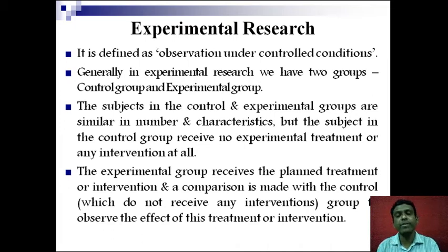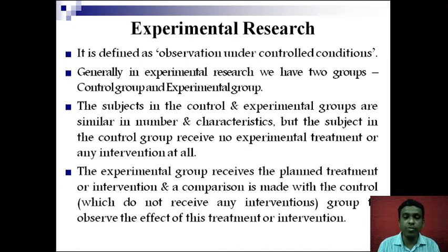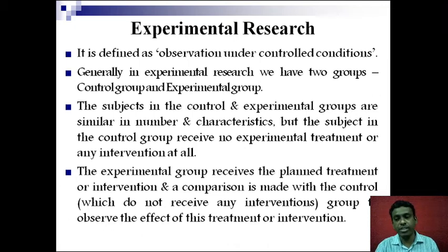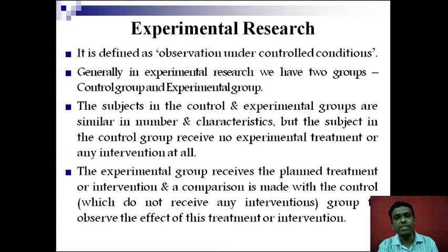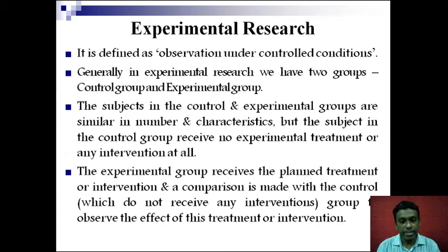Whereas in the experimental group, that is where we carry out our experiment, our modifications, our changes, our interventions. The experimental group receives the planned treatment or intervention. Because of those planned treatments or interventions, the outcomes of the control group and the outcome of the experimental group will be different. This difference can be attributed to the intervention — the planned treatment that we have done.